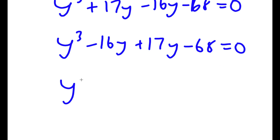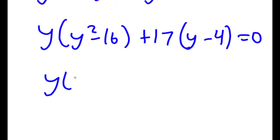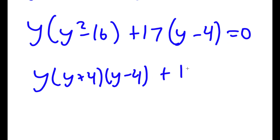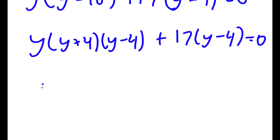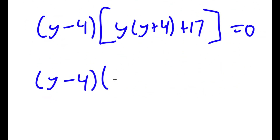From y cubed minus 16y, I factor out y to get y times (y squared minus 16), and from 17y minus 68 I factor out 17 to get 17 times (y minus 4), equal to 0. That simplifies as y times (y plus 4)(y minus 4) plus 17 times (y minus 4) equals 0. Factoring out (y minus 4) gives (y minus 4) times (y squared plus 4y plus 17) equals 0.